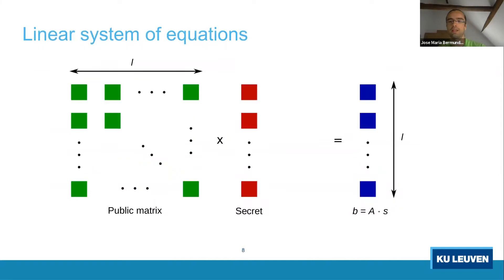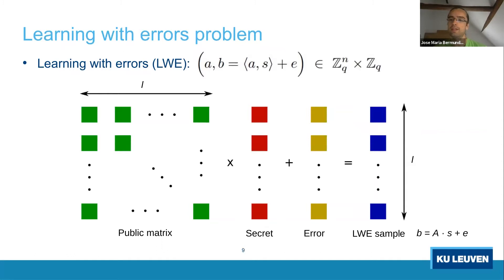Now I'm going to introduce lattice problems. Starting from a linear system of equations, we have a public matrix A and a secret S, and we build samples combining this public matrix with the secret. This would not be secure because we can retrieve the secret simply by solving the linear system — we know A and we know the sample B. However, when we introduce an error term, we no longer have a linear system. If the dimension of the matrix and vector is large enough, we have the Learning With Errors problem — a hard problem — and with a hard problem we can build a cryptosystem.